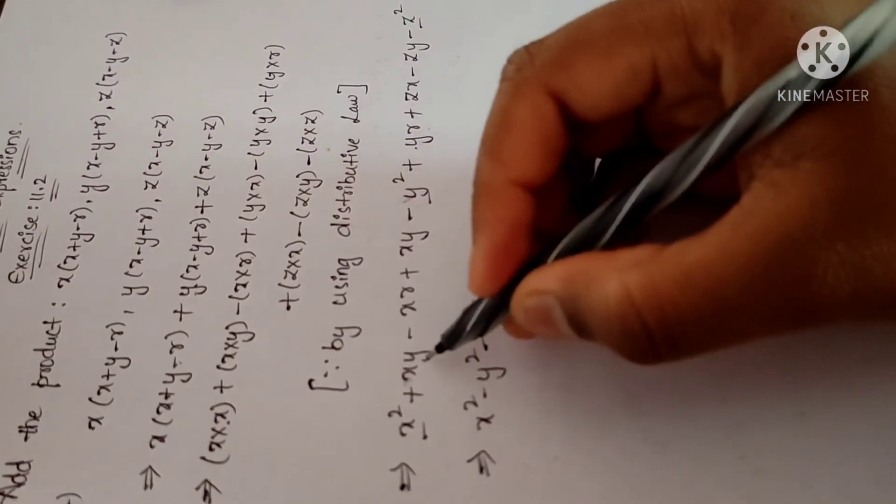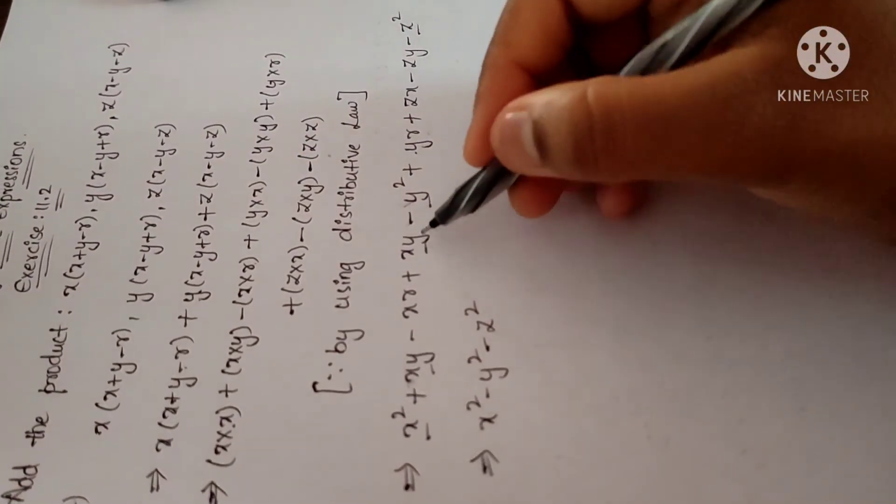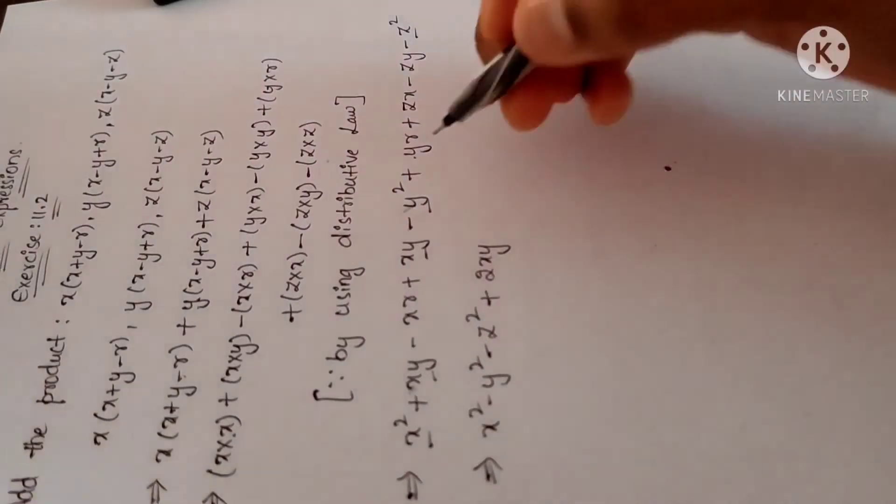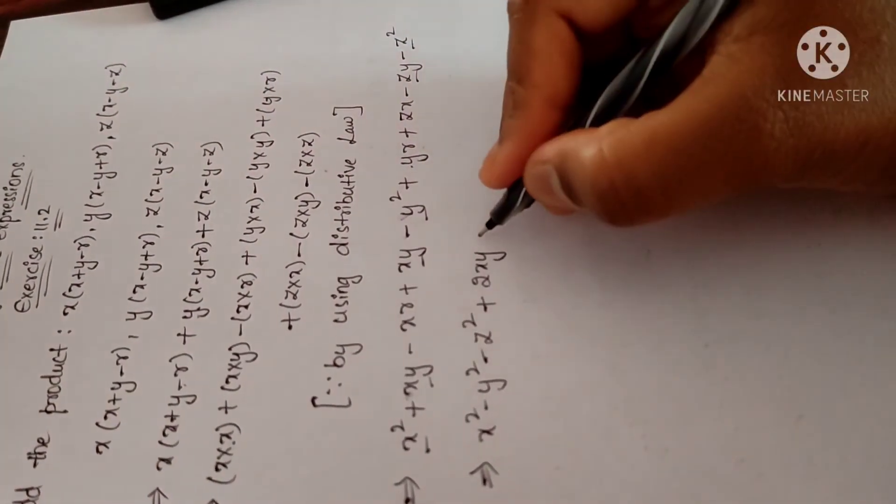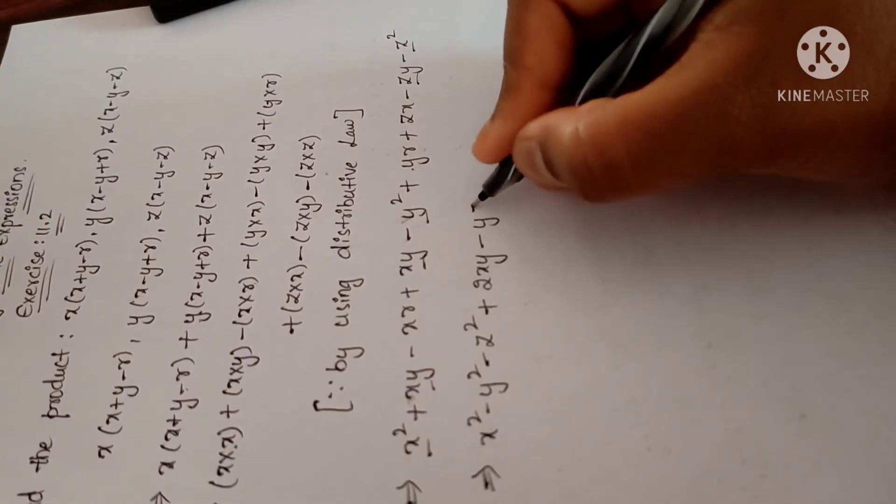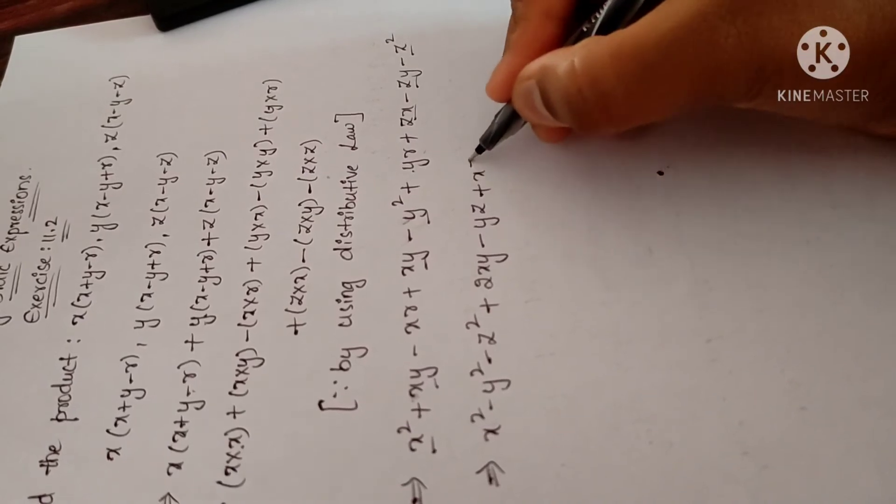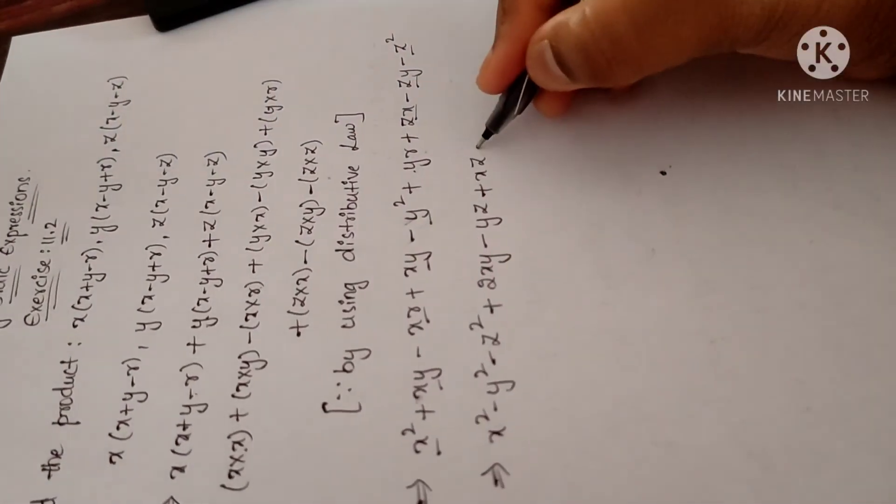Then here xy plus xy we get 2xy. Next minus yz, that means minus yz plus xz minus xr plus yr.